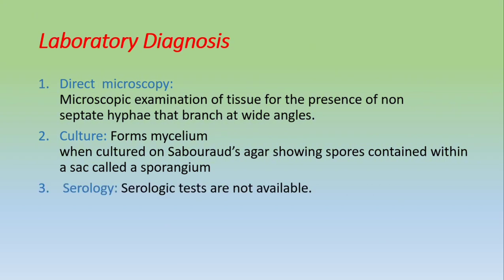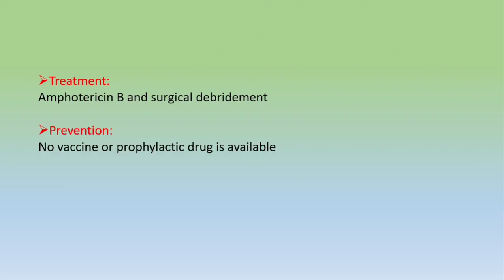Lab diagnosis: Direct microscopy reveals non-septate hyphae branching at a wide 90-degree angle. Culture on appropriate media produces mycelium. This concludes our discussion of opportunistic mycosis, covering Candida, Cryptococcus, Aspergillus, and Mucor/Rhizopus.